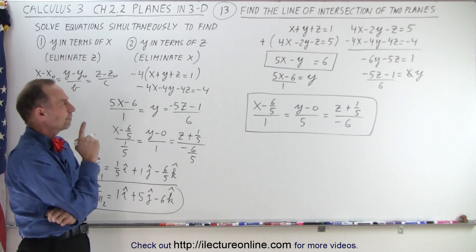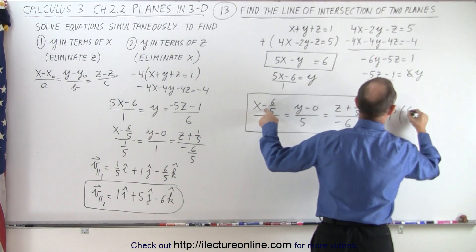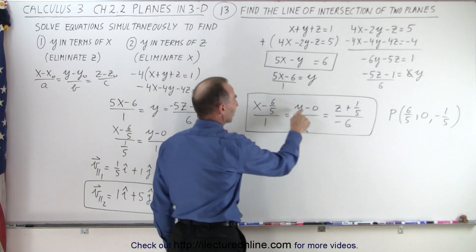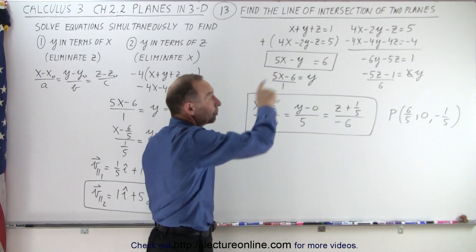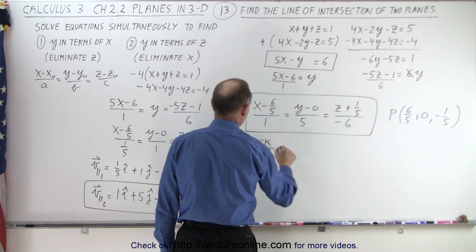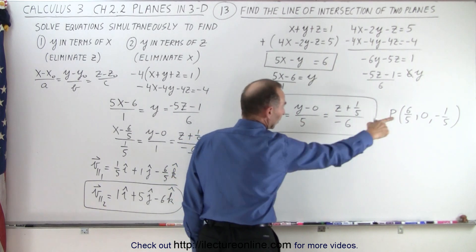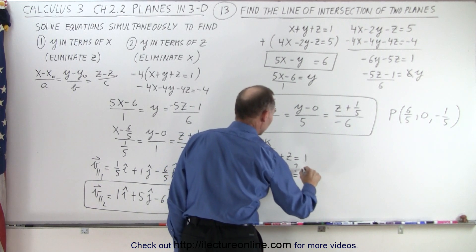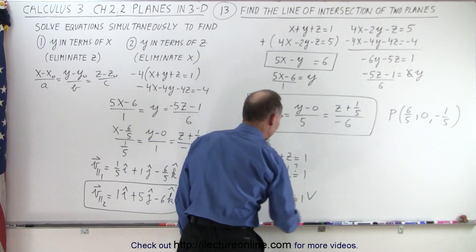To make sure we did it correctly, I'm going to find a point on the line. Based on the equation, the point on the line is going to be (6/5, 0, −1/5) — those are the x, y, and z coordinates of a point on the line. If I plug those into the original equation for both planes, that should satisfy both. For the first equation, x plus y plus z equals 1: plugging in, we have 6/5 plus 0 minus 1/5. That's 5/5 which is indeed equal to 1. So that checks.